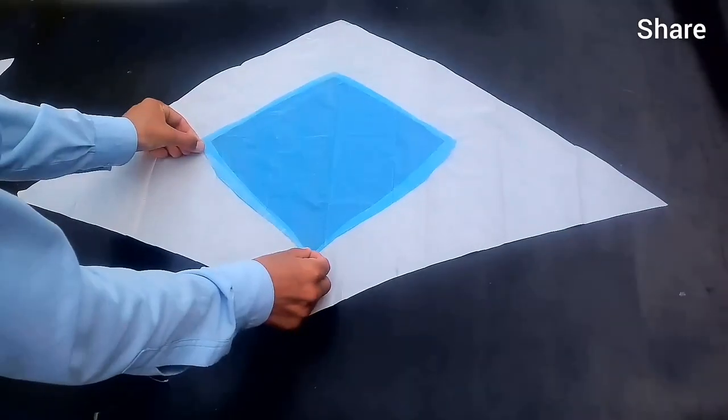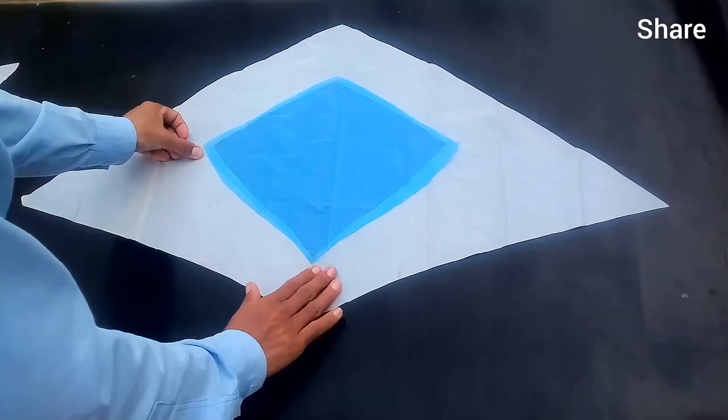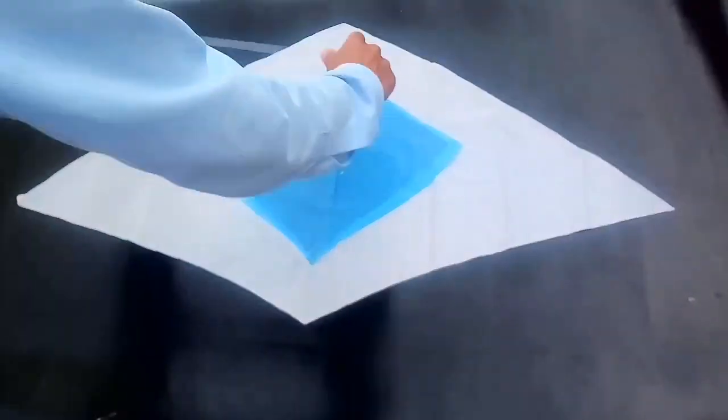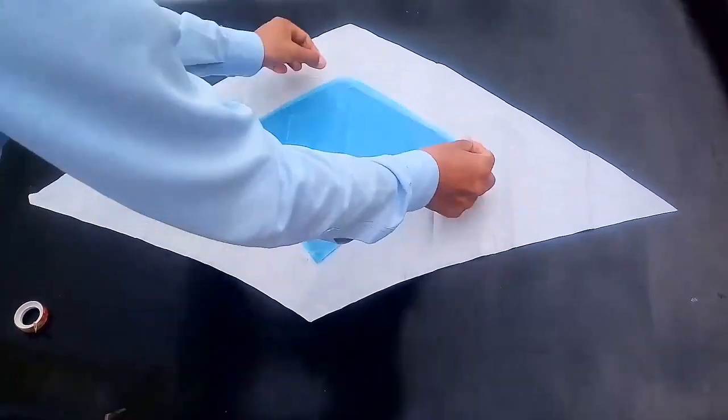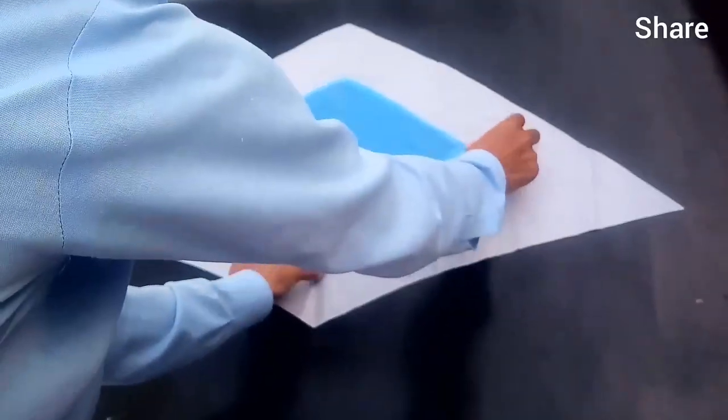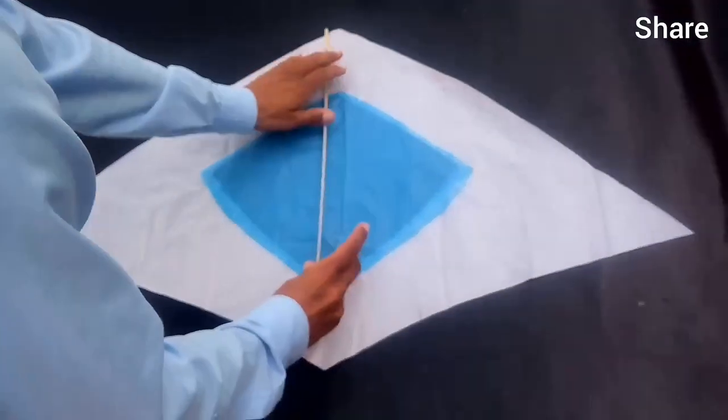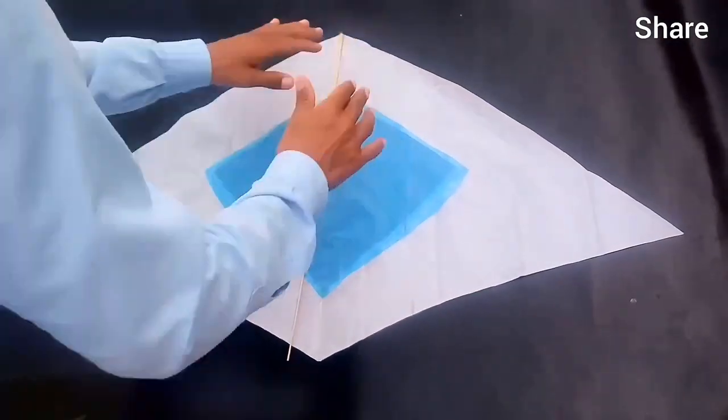We are jointing with installation tape. Viewers, we are making this international kite. We are jointing the bumble stick with installation tape.